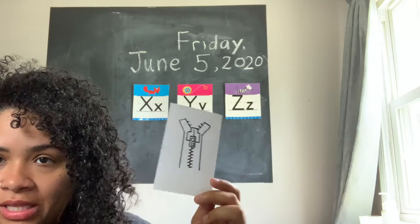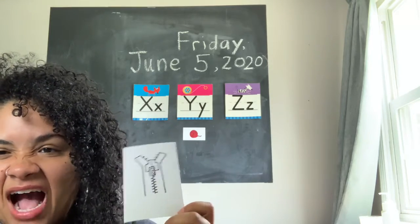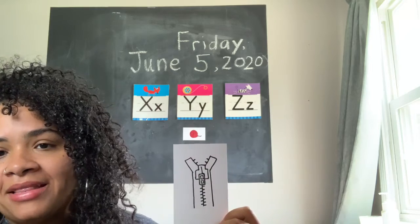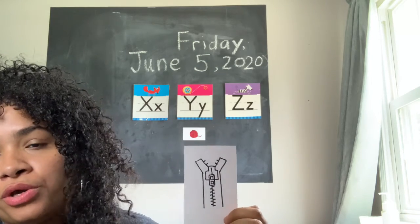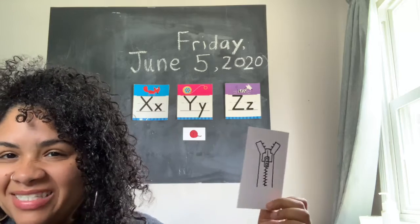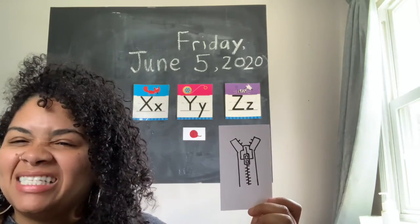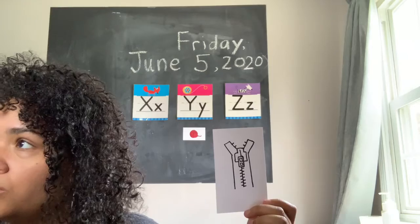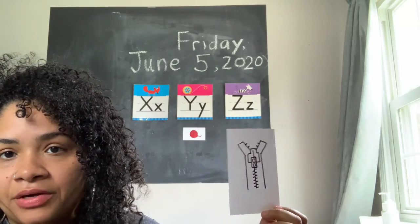Next one is zipper. Does zipper begin with the letter X, like xbox? Does it begin with the letter Y, like yo-yo and yarn? Or does it begin with the letter Z, like zebra? I think zipper begins with the letter Z, like zebra.